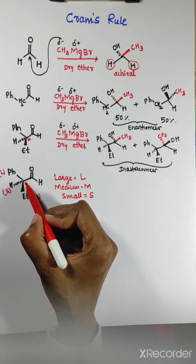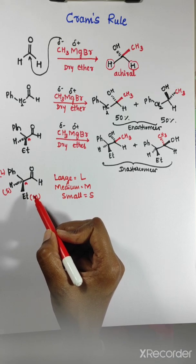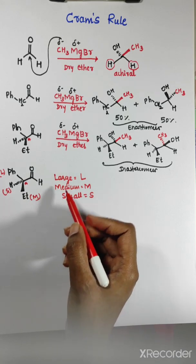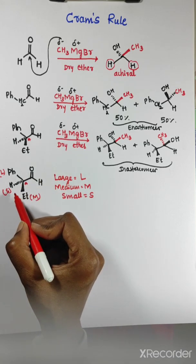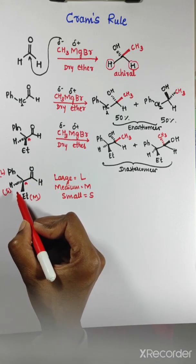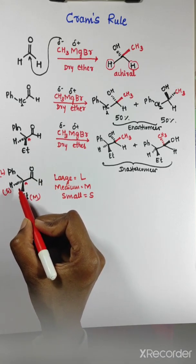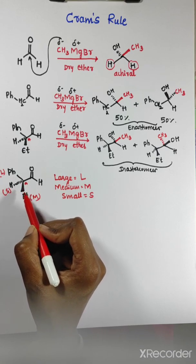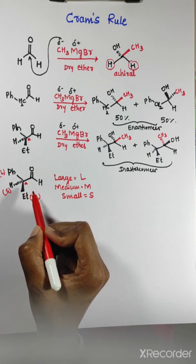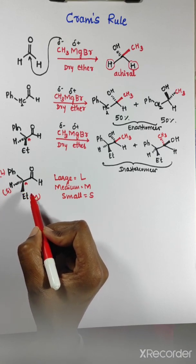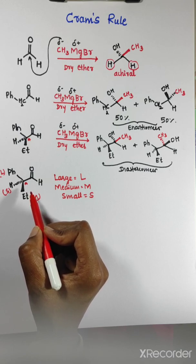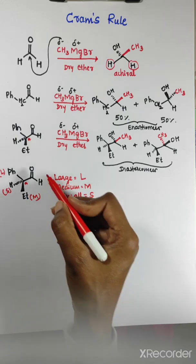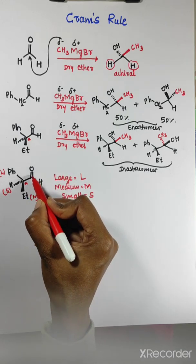The next condition is: the nucleophile must attack from the less hindered side. Out of these three groups - small, medium, and large - the nucleophile will attack from the least sterically hindered side.